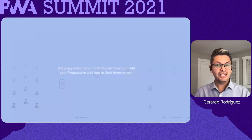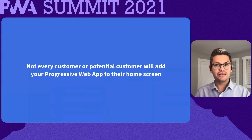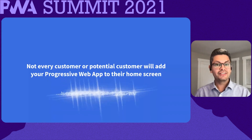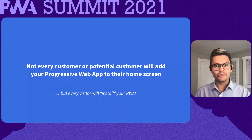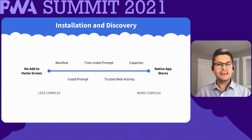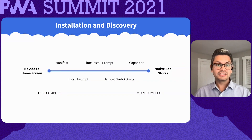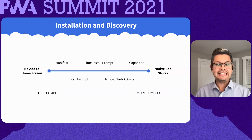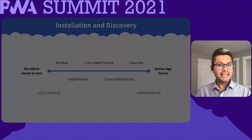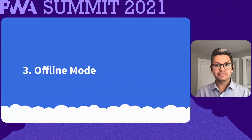Remember, not everyone will add your PWA to their home screen, but every visitor will install your PWA once the service worker is installed. There is a continuum. We've had clients on both ends of the spectrum — some clients didn't want people to be prompted to install the PWA, and we've had other clients who felt being in native app stores was critical. And now I'll pass it over to Jason, who will talk about the third factor: offline mode.